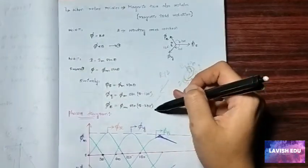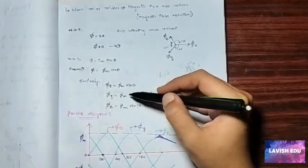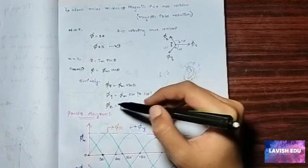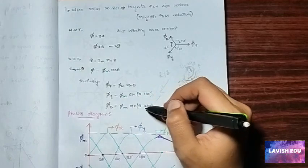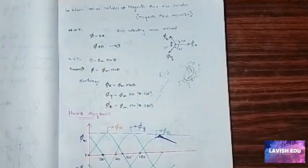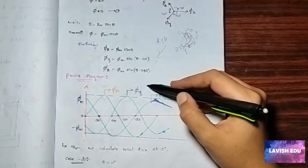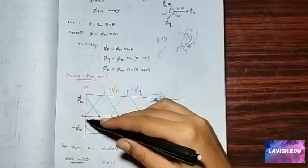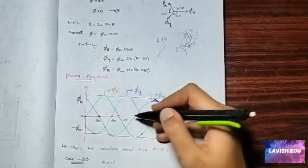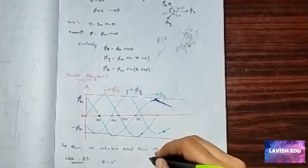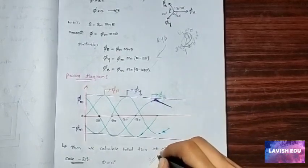Similarly, we can note for each of them which is Φy is equal to Φm sin(θ - 120) and Φb is equal to Φm sin(θ - 240). This is a phasor diagram that we have denoted from the three of them. Here we have got the different angles.